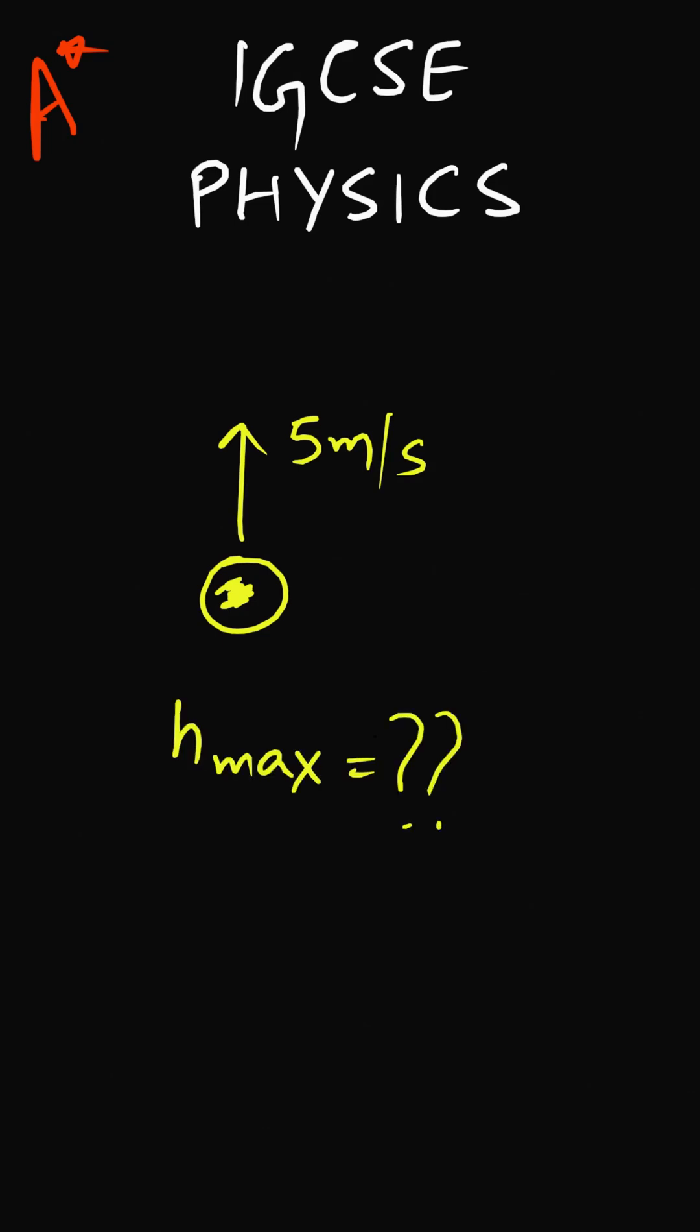Hello and welcome to day 2 of getting closer to an A-star in your IGCSE physics. The problem for the day is that we have a ball which is thrown vertically upwards with a velocity of 5 meters per second. We need to calculate how high will it go in its journey.